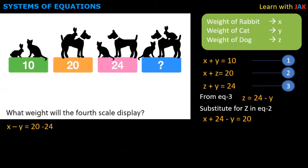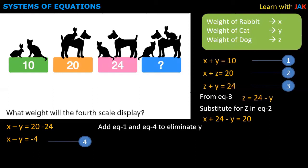We will rearrange the equation: x minus y is equal to 20 minus 24. We have the equation x minus y is equal to minus 4. We have equation 1 and equation 4. If we add them, we will cancel y. We have 2x is equal to 6.